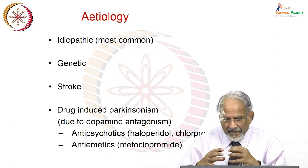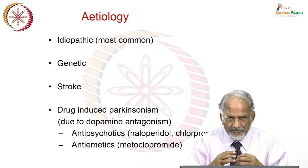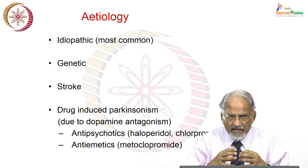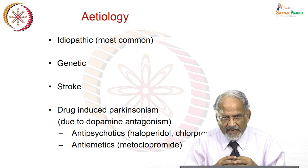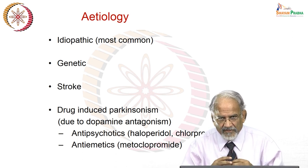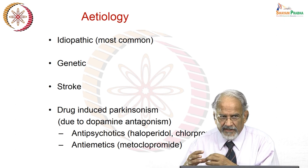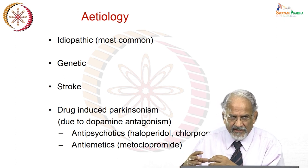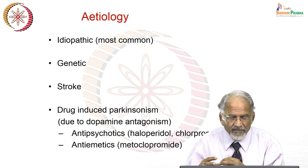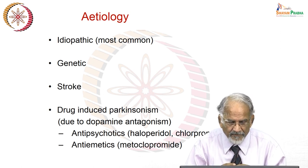Many times after a stroke — ischemic stroke particularly, or sometimes hemorrhagic stroke — post-stroke, there is also dopaminergic neuron degeneration which leads to Parkinsonism-like symptoms.